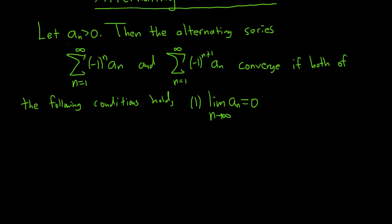Notice that a sub n here is the non-alternating part. It doesn't have the negative 1 to the n. It's the piece without it. So that always has to be equal to 0. And condition 2: a sub n is called non-increasing. So that basically means it's decreasing or staying the same. A sub n plus 1 is less than or equal to a sub n. So it's either getting smaller or staying the same. So non-increasing.